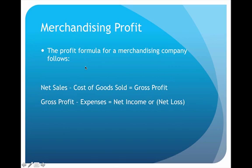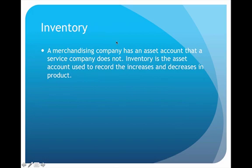In a merchandising company, that profit formula will be a little different — it's set up as a two-part formula. The first part starts with net sales (the revenue), then we deduct the cost of goods sold, which represents the cost of the product, to get the gross profit. Gross profit is simply the profit made on selling the product itself. To get the final net income or net loss, we then deduct all the various expenses from gross profit.